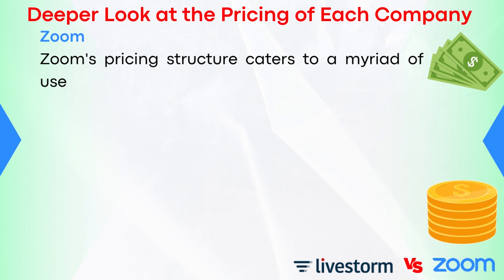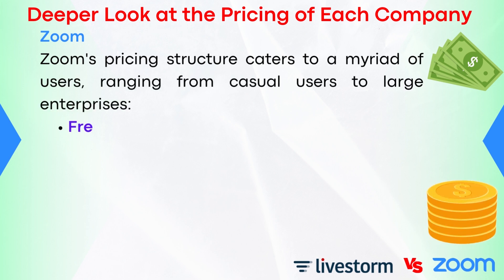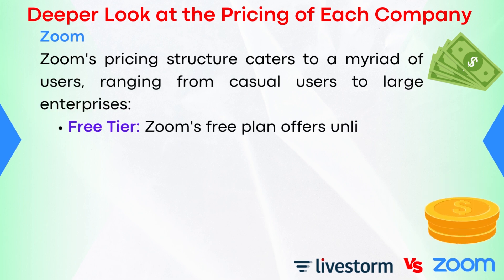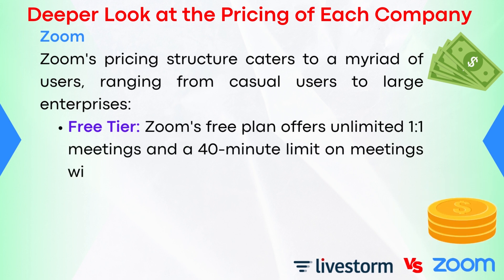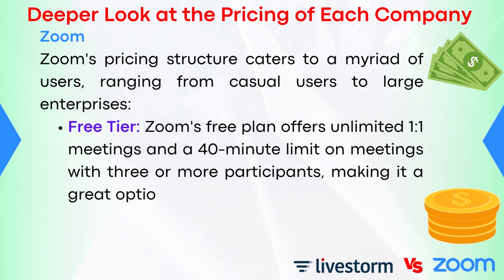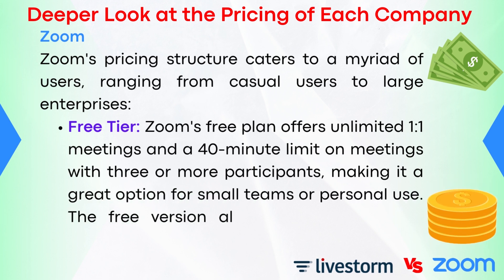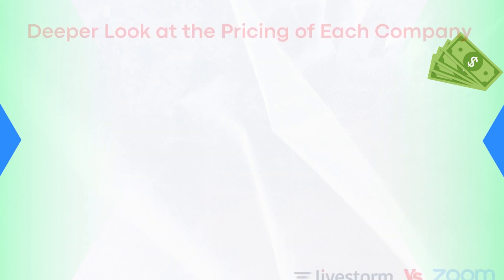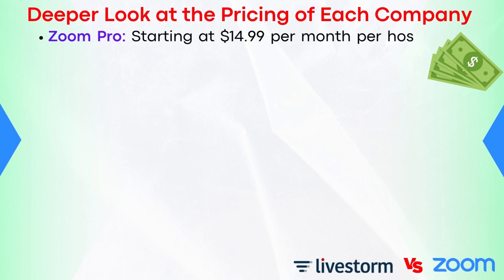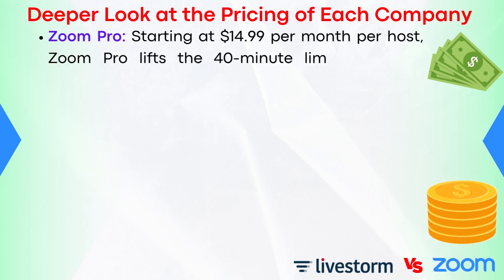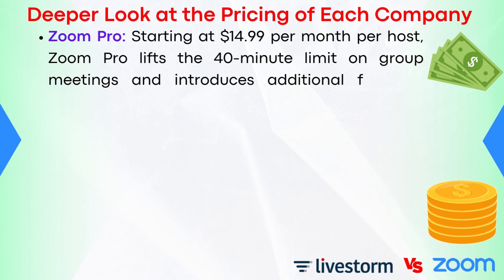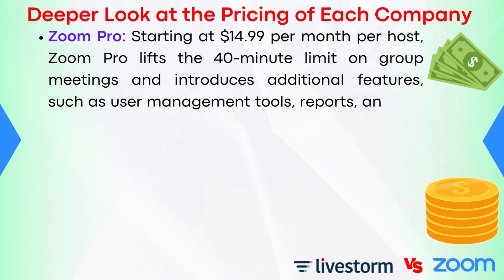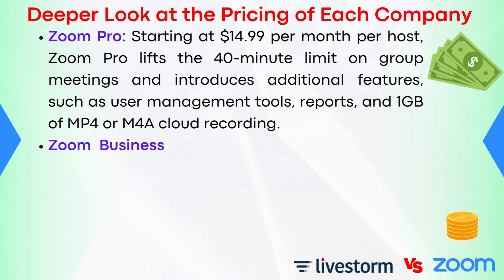Let's now take a deeper look at the pricing of each company, and we'll start off with Zoom. Zoom's pricing structure caters to a myriad of users, ranging from casual users to large enterprises. Free tier: Zoom's free plan offers unlimited one-on-one meetings and a 40-minute limit on meetings with three or more participants, making it a great option for small teams or personal use. The free version also provides access to features like HD video, screen sharing, and breakout rooms. Zoom Pro: Starting at $14.99 per month per host, Zoom Pro lifts the 40-minute limit on group meetings and introduces additional features, such as user management tools, reports, and one gigabyte of MP4 or M4A cloud recording.